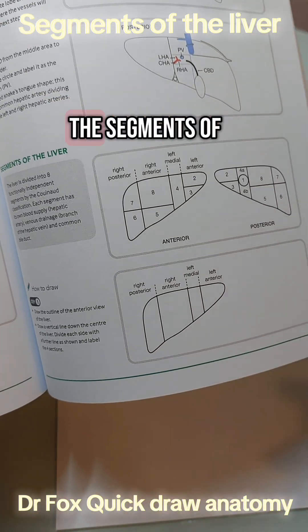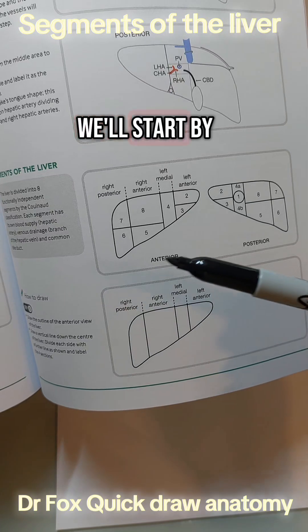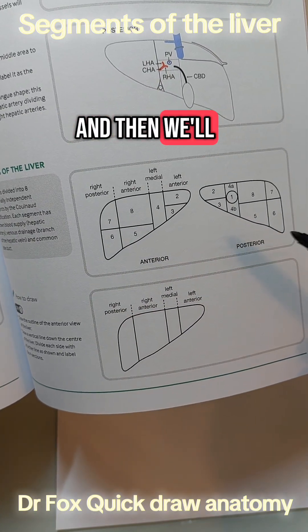Next we're going to look at the segments of the liver. We'll start by looking at the anterior and then we'll look at the posterior.